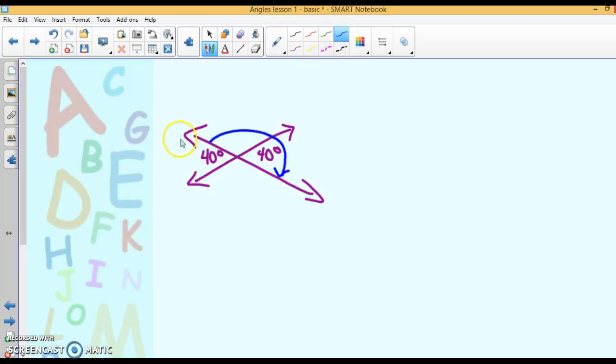Now, if you look at a linear pair, these two form a straight line or a straight angle. A straight line is 180 degrees. So if this is 40, won't this angle be 180 minus 40, which is 140? If that angle is 140, this angle is also 140, because they are vertical angles.